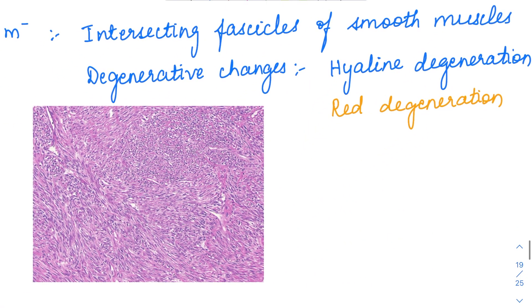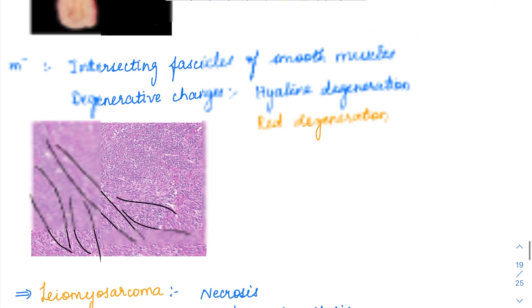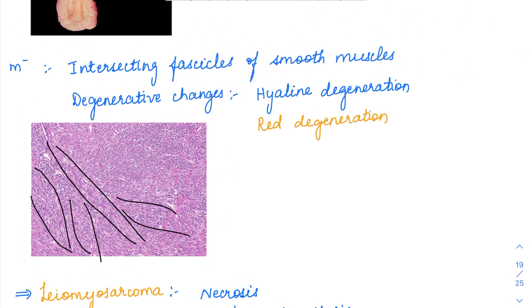Microscopically, these smooth muscles form long fascicles. These intersecting, sweeping fascicles of smooth muscles are the characteristic feature of leiomyomas.